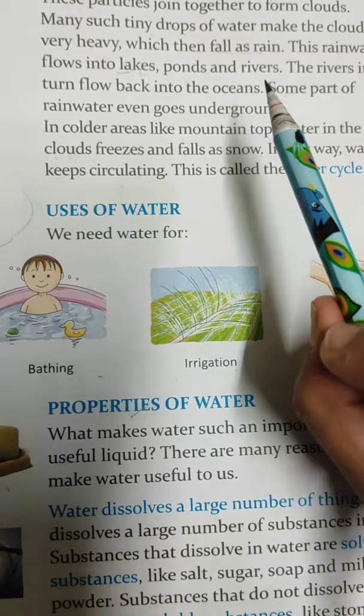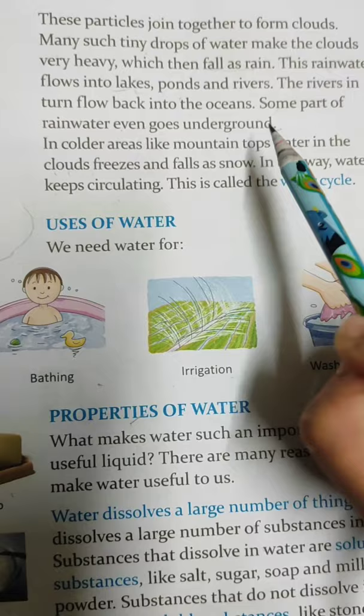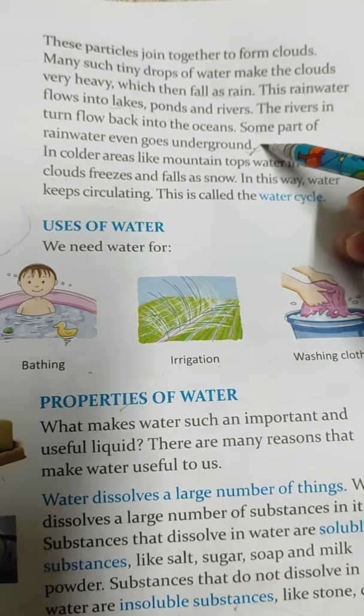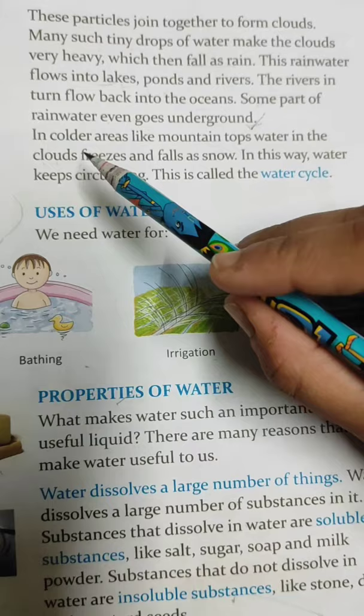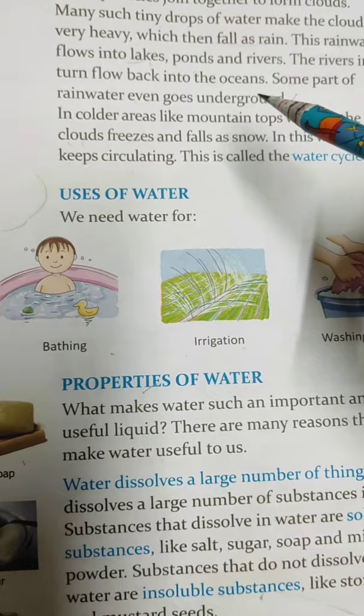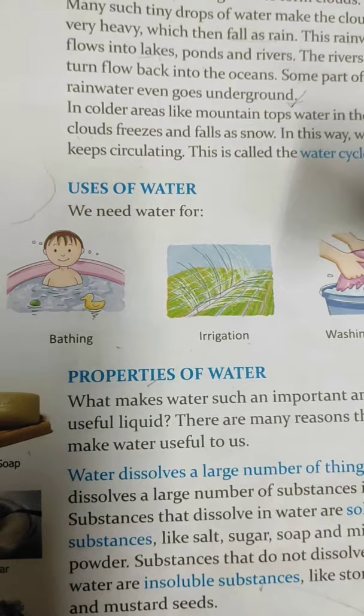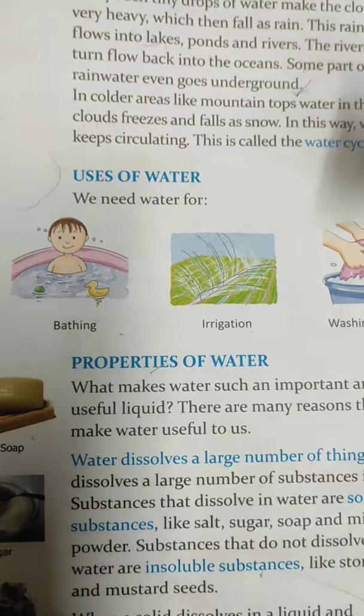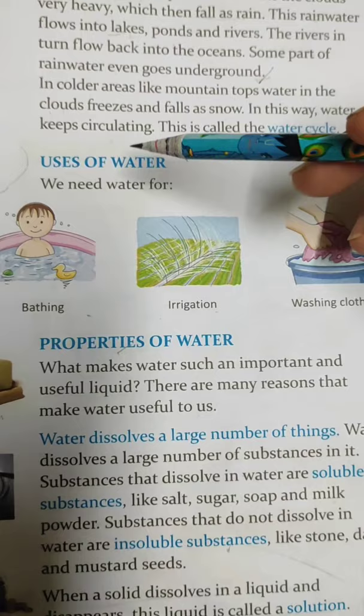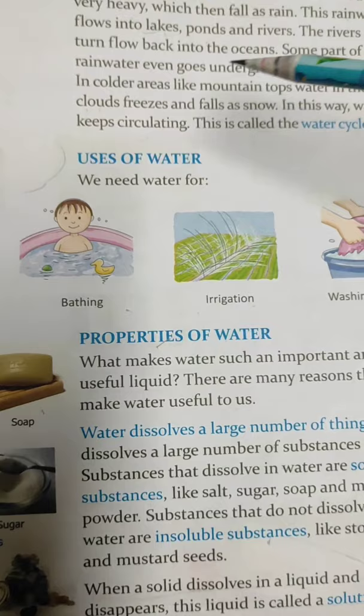Some part of rain water goes underground, and this underground water is used by us. In colder areas like mountain tops, water in the clouds freezes and falls as snow. Mountains ke upar ka pani rain ban kar kyun nahi aata? Kyunki mountains ka area bahut thanda hota hai, aur wahan pe water vapors aur zyada thande hone ki wajah se they get converted back into ice form and come as snow. In this way, water keeps circulating — this is called the water cycle. Ocean se air mein gaya, aur air se vapis oceans mein aa gaya.